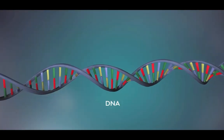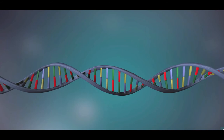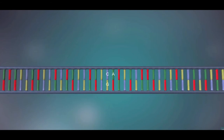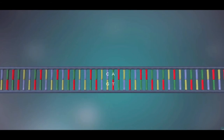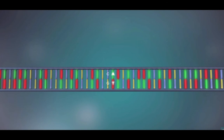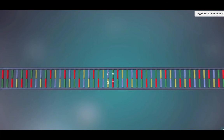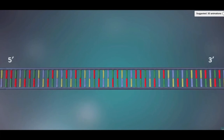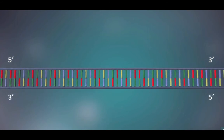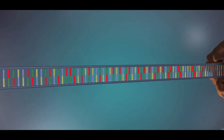DNA is a molecule made up of two strands twisted around each other in a double helix shape. Each strand is made up of a sequence of four chemical bases represented by the letters A, C, G, and T. The two strands are complementary — wherever there's a T in one strand, there will be an A in the opposite strand, and wherever there's a C, there will be a G. Each strand has a 5' end and a 3' end, and the two strands run in opposite directions. This determines how each strand of DNA is replicated. The first step in DNA replication is to separate the two strands — this unzipping is done by an enzyme called helicase, resulting in the formation of a replication fork.